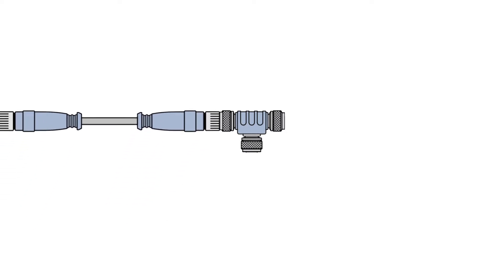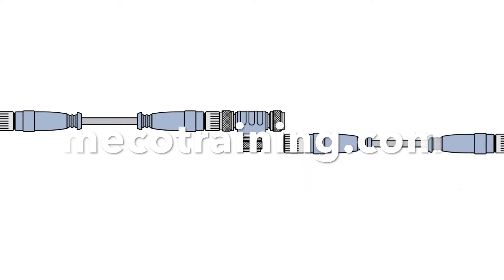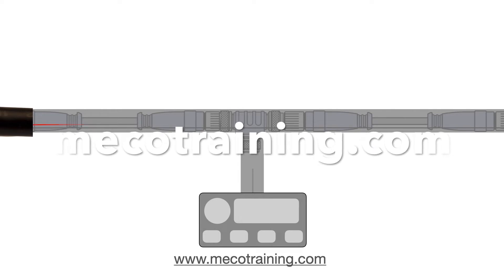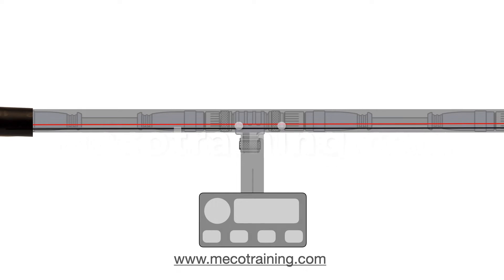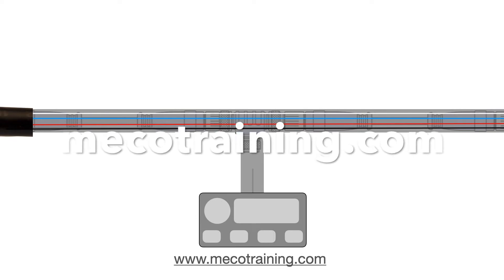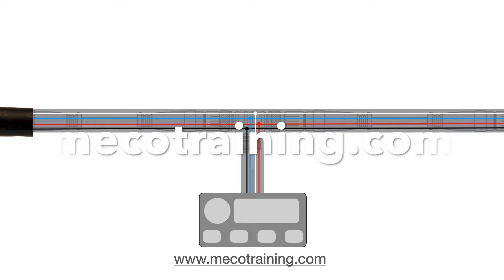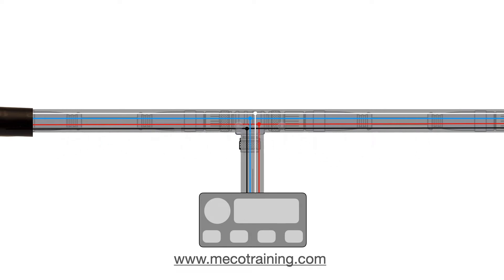This MECO training session is about the NMEA 2000 signal. During this session you will learn how the binary data signal — the ones and zeros — are represented as voltages on the NMEA 2000 bus. Let's consider a section of the NMEA 2000 bus as shown, with a tee piece and a drop cable to a device. Inside the cabling there are 12-volt positive and negative conductors, and it's important to note that even if a device is not fully powered from the bus, bus power is still required to enable a device to interact with the bus.